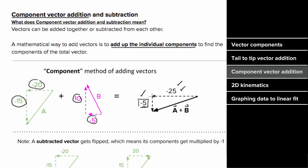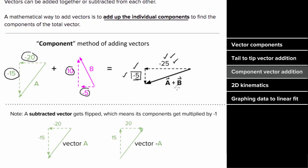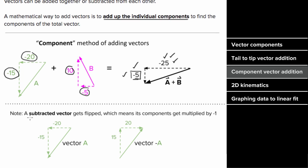This technique lets you quickly determine the individual components of the total vector. And if you need to subtract a vector, you can still add the components, except the components of a negative vector all get multiplied by negative one. So if vector a has components negative 20 and negative 15, then negative vector a would have components positive 20 and positive 15.